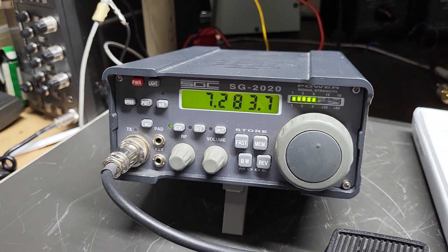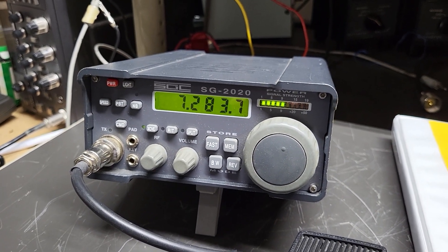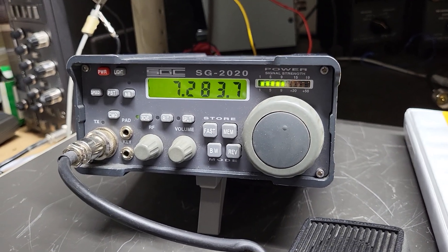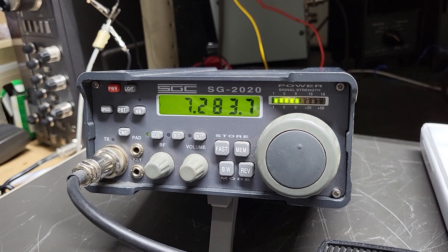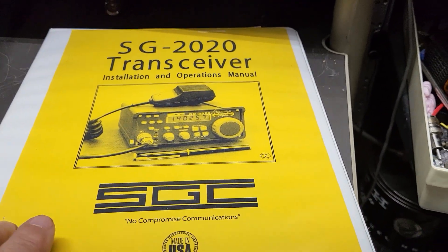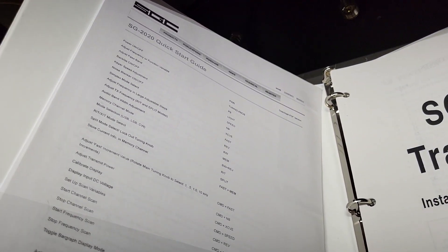All right, so here we have a very nice example of the SGC model SG-2020. This is a little QRP rig, and I have the original manual for it here as well as the quick start guide and lots of other documentation.